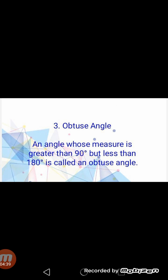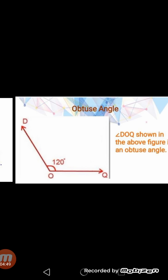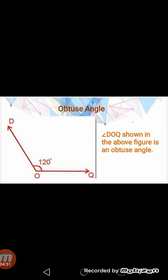Number three — Obtuse angle. An angle whose measure is greater than 90 degrees but less than 180 degrees is called an obtuse angle. See the diagram: we have angle DOQ and its measurement is 120 degrees. Now, 120 degrees is greater than 90 degrees but less than 180 degrees, so we can say that angle DOQ is an obtuse angle.